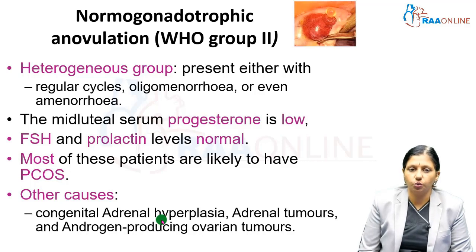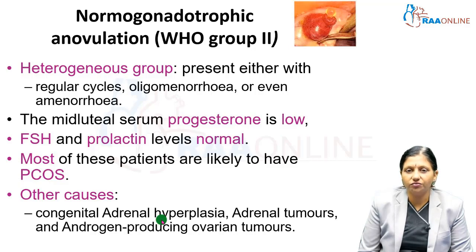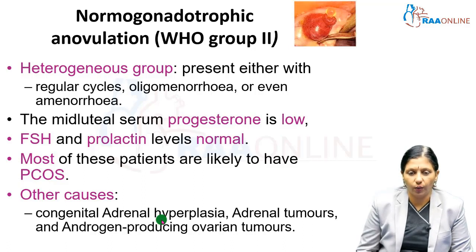WHO Group 2, normal gonadotropic anovulation, is a heterogeneous group presenting with regular cycles, oligomenorrhea, or amenorrhea. Mid-luteal serum progesterone is low, while FSH and prolactin levels are normal. Most of these patients are likely to have PCOS. Other causes of normogonadotropic anovulation include congenital adrenal hyperplasia, adrenal tumors, and androgen-producing ovarian tumors.